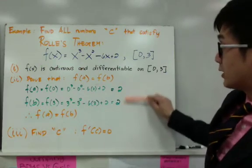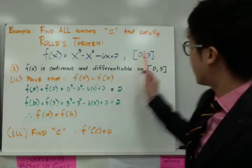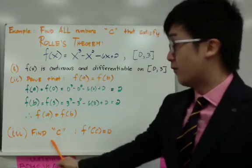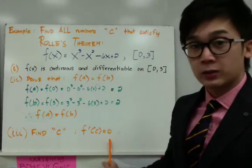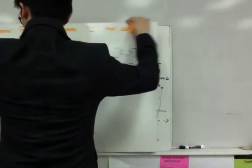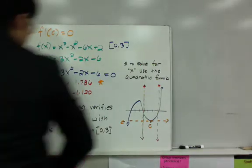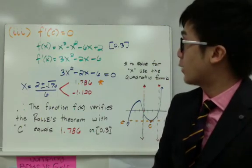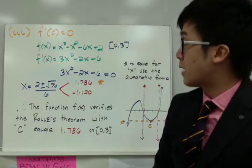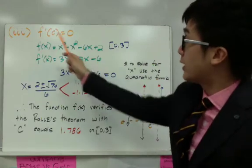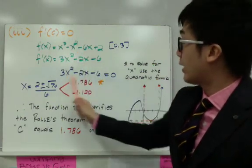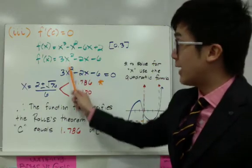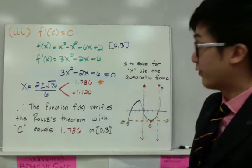We've verified the third condition, so we are now ready to find point c in the closed interval where the slope equals 0. We need to find f prime of c equal to 0. The first derivative of f of x equals x cubed minus x squared minus 6x plus 2 is f prime of x equal to 3x squared minus 6x minus 6. Since this is not factorable, we use the quadratic formula, which gives x equal to 2 plus or minus the square root of 76, all over 6.